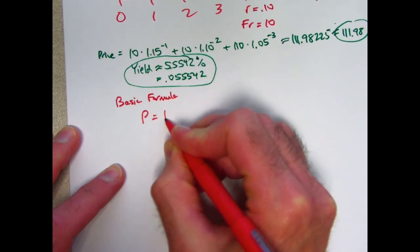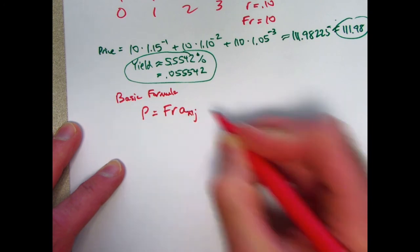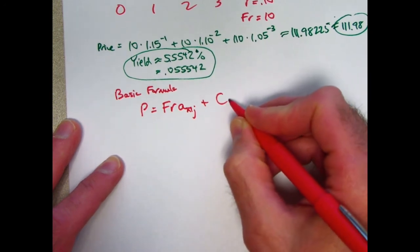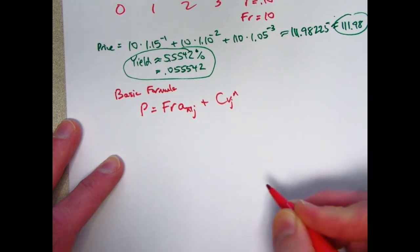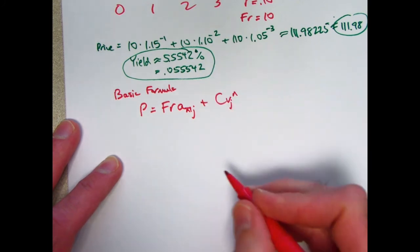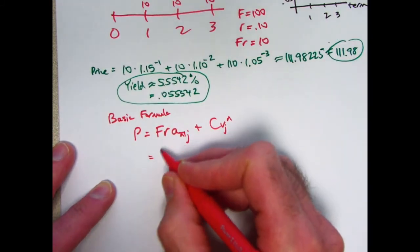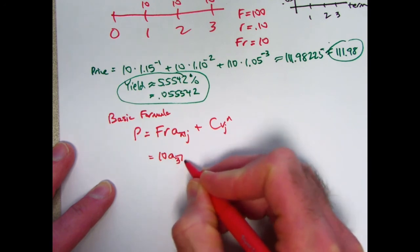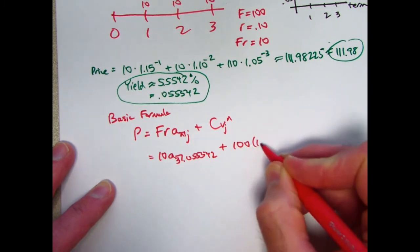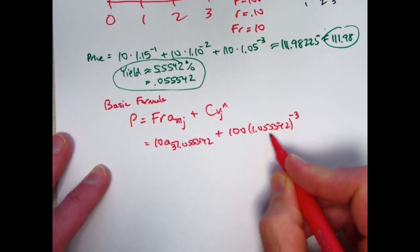It is that the price is the coupon amount, F times R, times the present value of an annuity immediate with N payments at the yield rate J, plus the present value of the redemption amount. The redemption amount is typically denoted by a C, and its present value would be V sub J to the N power, where N is the number of payments here. J is the effective periodic interest rate here, the yield rate. In this case, the J is going to be 0.055542. So now if I plug these numbers in here, let's just check that we get the same price. So F times R again is 10, N is 3, J is 0.055542. C, the redemption amount is 100, and then I'd have 1.055542 to the negative 3 power, because this is really 1 over V right there.